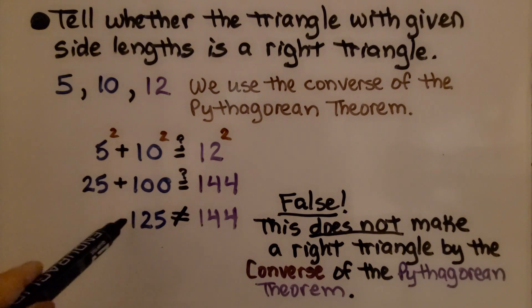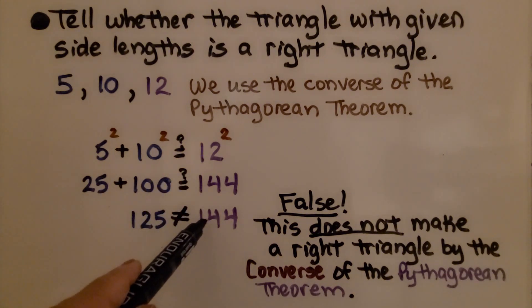This is 125. This is 144. They are not equal. This is false. This does not make a right triangle by the converse of the Pythagorean theorem.